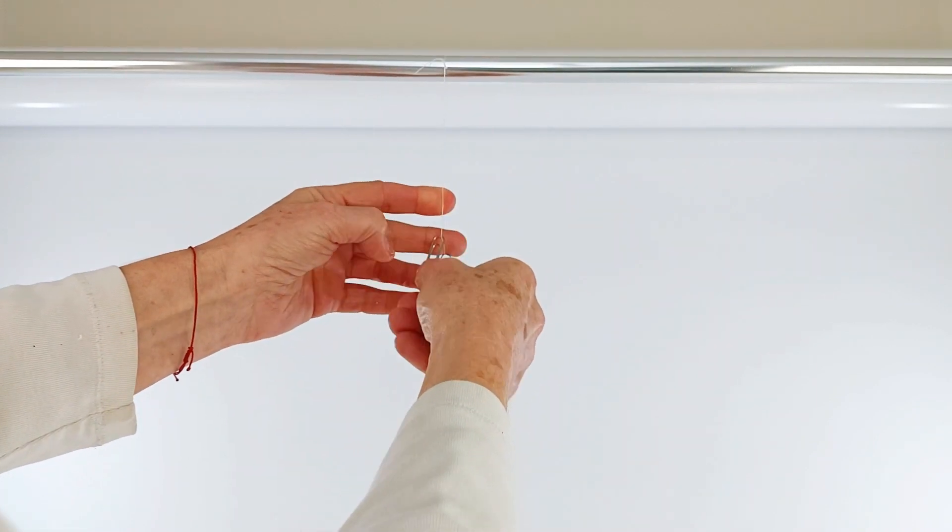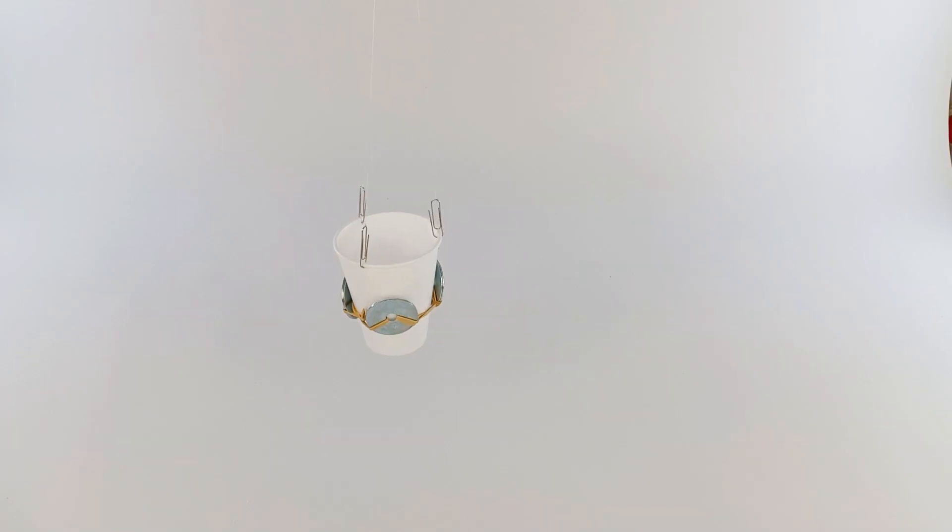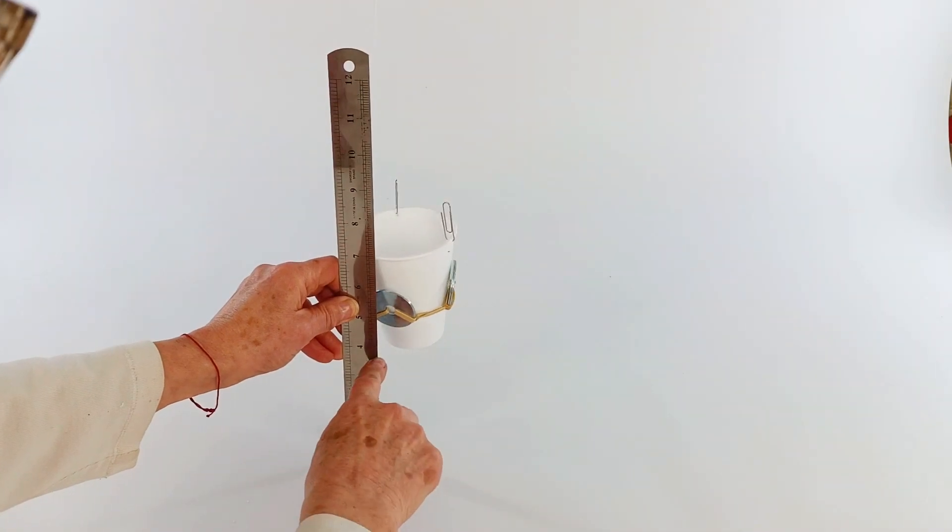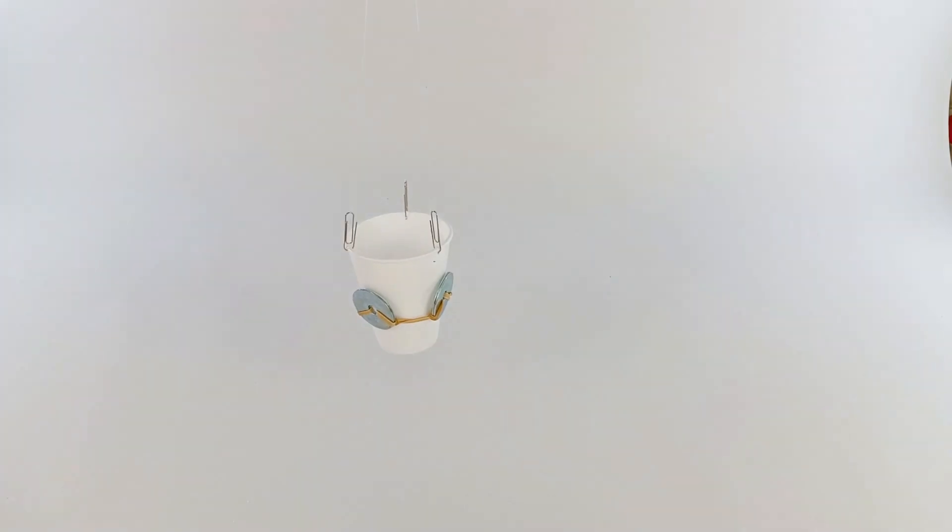Again we're going to attach that onto our fixed point. You want to be very careful that your strings don't get tangled here. That can be a bit of a challenge sometimes. So there we go, there's our measurement. So we've got about 10 centimeters from our paper.